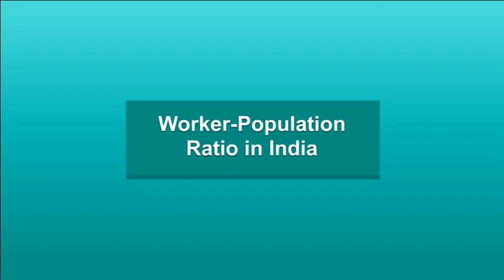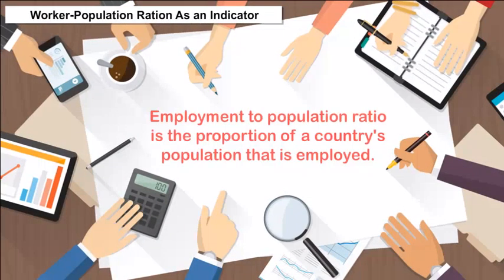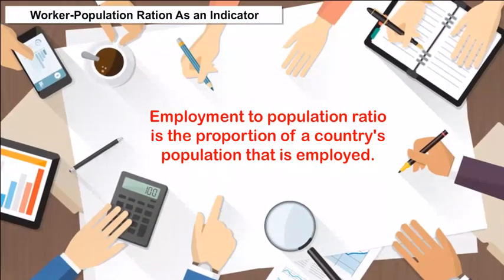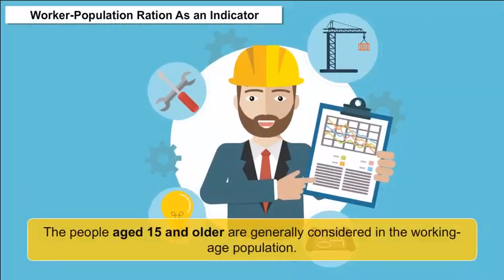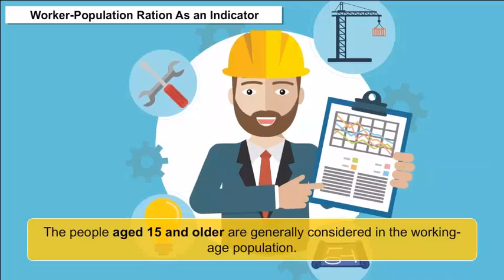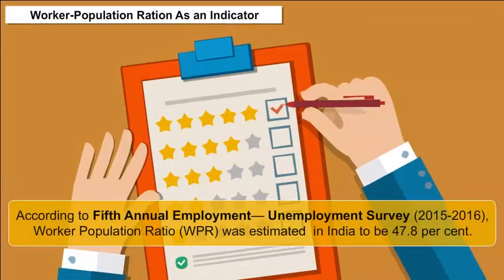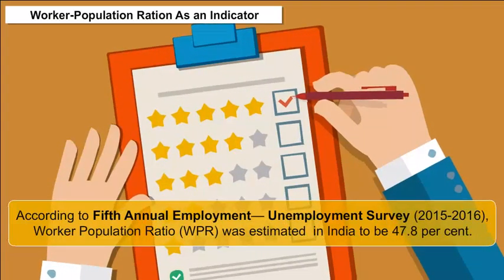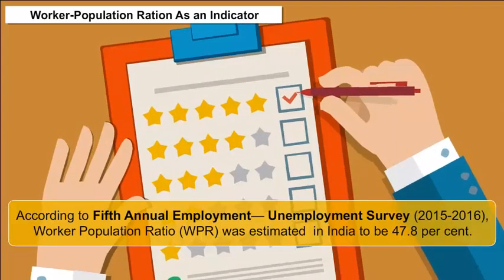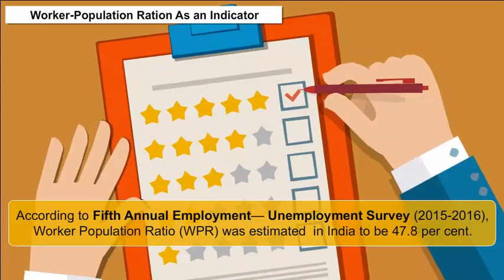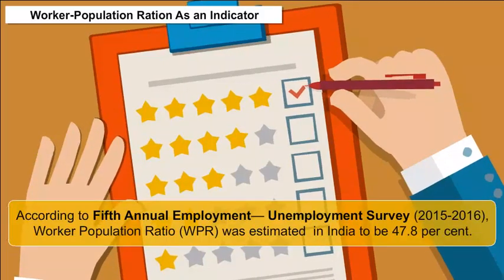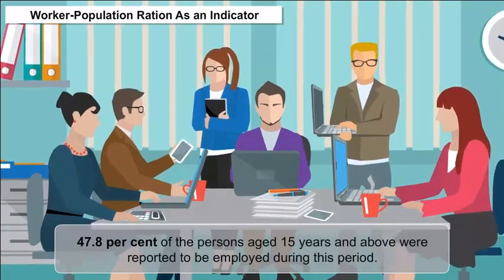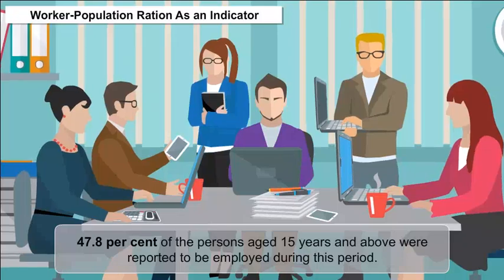The worker population ratio in India: Employment to population ratio is the proportion of a country's population that is employed. People aged 15 and older are generally considered in the working-age population. According to the 5th Annual Employment and Unemployment Survey 2015-16, the Worker Population Ratio (WPR) was estimated in India to be 47.8%, meaning 47.8% of persons aged 15 years and above were reported to be employed during this period.